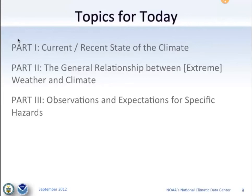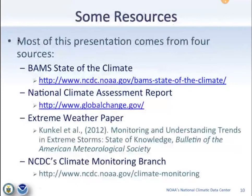We'll focus a little on frost and freeze events, the general relationship between extreme weather and climate, and then time permitting, some specific types of extreme weather. A lot of this content comes from the Annual State of the Climate Report, which brings about 400 authors together from about 50 countries to write what they know about glaciers, sea surface salinity, land surface temperature, lake temperature, and so on — the numbers associated with the physical climate system each year.